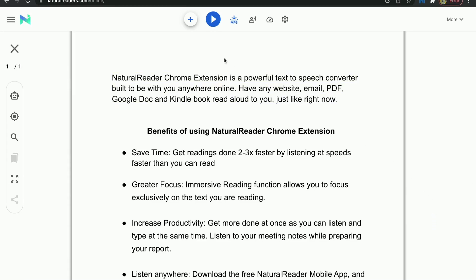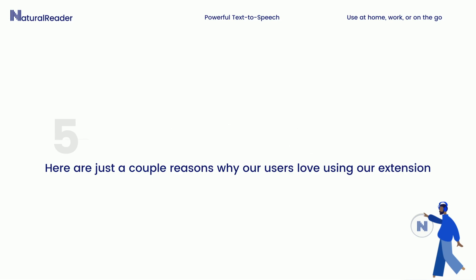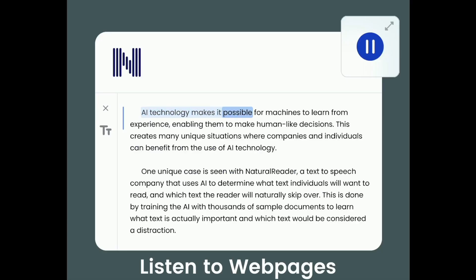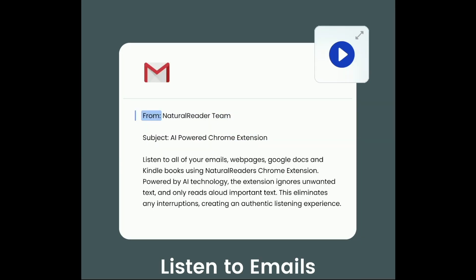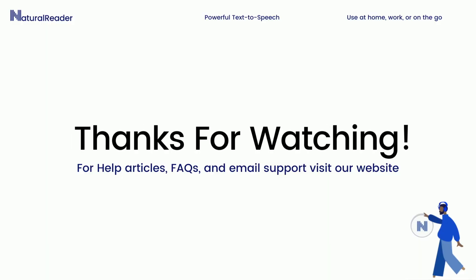Here are just a couple reasons why our users love using our Chrome extension. AI technology makes it possible for machines to learn from experience, enabling them to make human-like decisions. From the Natural Reader team, subject: AI-powered Chrome extension. Listen to all of your emails, webpages, Google Docs, and Kindle books using Natural Reader's Chrome extension. Proofread your assignment, presentation, book, or article by listening to it. Thanks for watching.